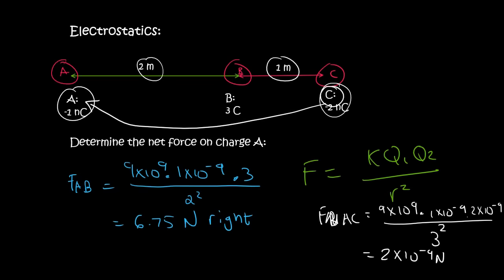Now what would C do to A? Well, they're both negative. And so if they have the same charge, they will repel. So they'll push away from each other. So C would move to the right, and then A would move to the left. So this is going to be left.